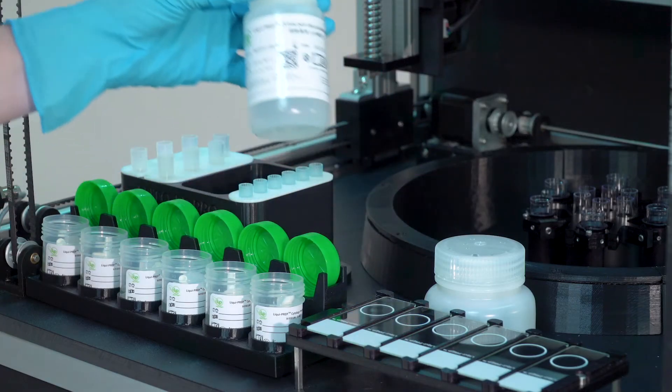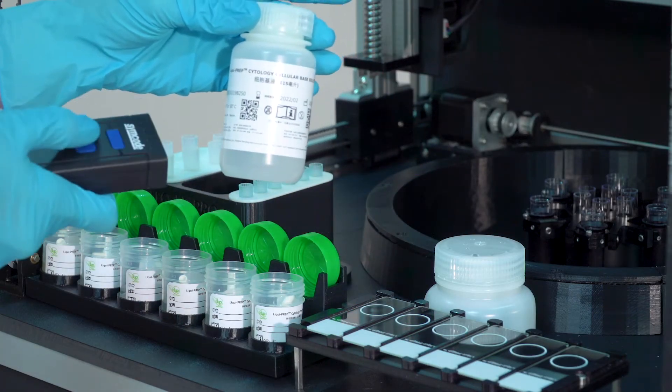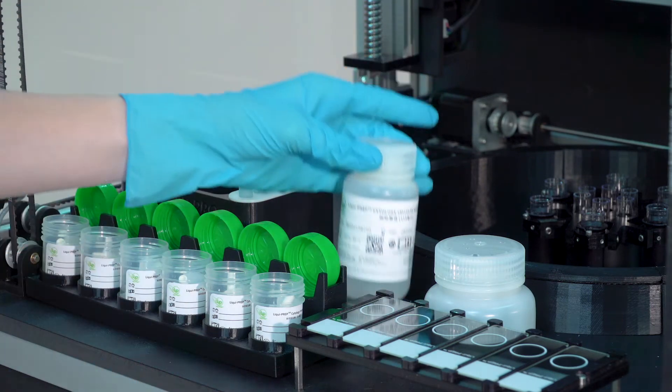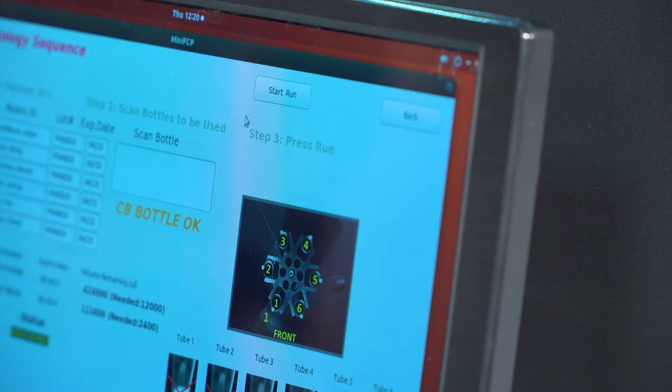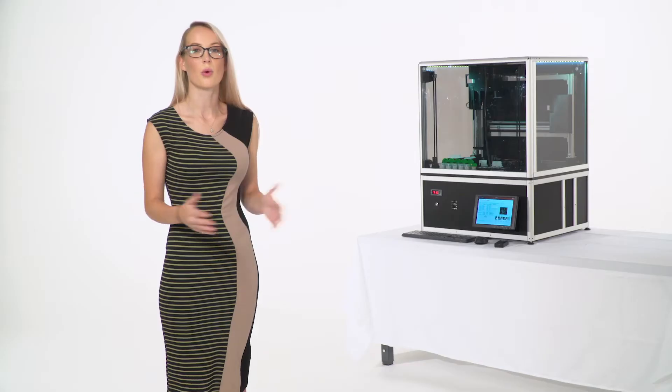Scan the LIQUIPREP reagents using the barcode scanner, then place the reagent bottles into the AutoLP Pro. Input the specimen information into the system, then start the processing run and walk away.